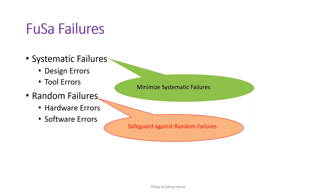So what is a functional safety failure? Functional safety failures are basically classified as systematic failures and random failures. Systematic failures are classified as design errors and tool errors, while random failures are caused due to hardware errors and software errors. Functional safety mainly focuses on minimizing systematic failures and safeguarding against random failures. Today's focus is completely on random failures.